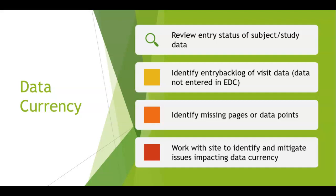Finally, if the site is struggling to keep current with data entry — which can happen if the site doesn't have enough staff to handle all the trials they're running, or if enrollment goes very quickly and they can't keep up — the CRA would sit down and talk with the site staff and ask what things are keeping them from being current with the data, how they can be helped, and whether they need to discuss getting more staff.